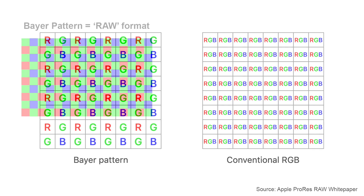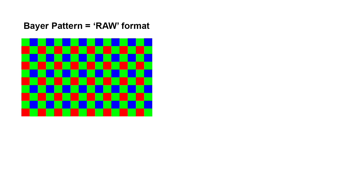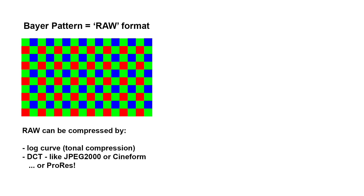Whenever a file is storing mosaic data like a Bayer pattern, it can be described as a true RAW format. Note that RAW formats can also be compressed. Every RAW, for instance, has a tonal compression by applying a log curve, which brings the 16-bit linear signal from the sensor into a 12-bit log format, resulting in lower file sizes. Alternatively, or in addition to that, the file itself can be compressed using a DCT like JPEG-2000 or Cineform, or in our case ProRes.